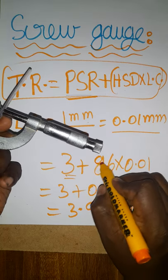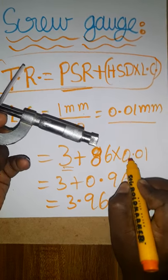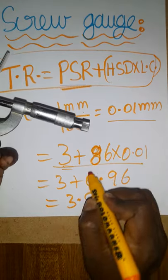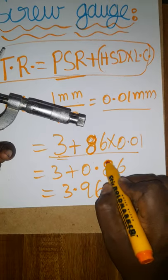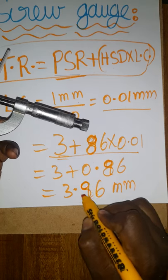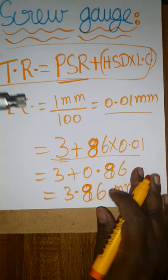Multiplying by the least count gives us the total value. So 3 plus 86 times 0.01 equals 3 plus 0.86, which gives us 3.86 millimeters. Thank you.